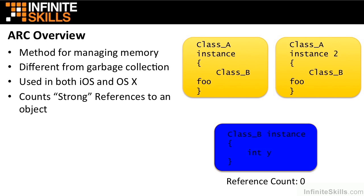Automatic reference counting counts strong references to an object. What this means is when you assign one object to another, by default it's a strong reference, and then the count of the destination object goes up by one.